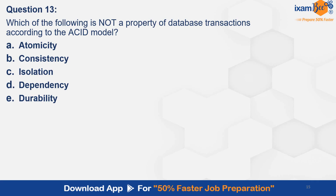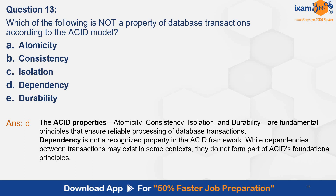Question 13. Which of the following is not a property of database transactions according to the ACID model? Option A. Atomicity. B. Consistency. C. Isolation. D. Dependency. E. Durability. And the correct answer is D — dependency. The ACID properties — atomicity, consistency, isolation, and durability — are fundamental principles that ensure reliable processing of database transactions. Dependency is not a recognized property in the ACID framework. While dependencies between transactions may exist in some contexts, they do not form part of ACID's foundational principles.